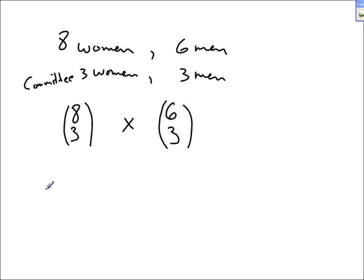When the order doesn't matter, you use combinations. The number of ways of choosing 3 women from 8 is C(8,3), and the number of ways of choosing 3 men from 6 is C(6,3). You multiply these together for the total number of ways.